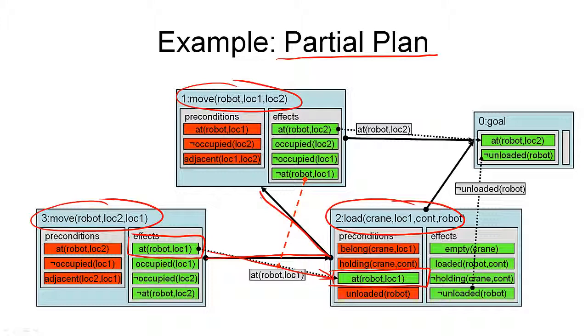Finally, partial plans may not have fully instantiated actions. Some of the actions may contain variables. That is something I've already mentioned during lifted backward search. And in partial order planning, that is usually done. A planner that searches the space of partial plans is the UCPOP planner developed in the early 90s. We will see the pseudo code for this planner later in this segment.